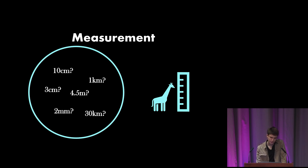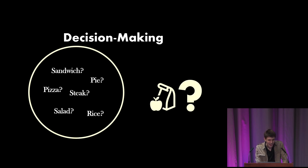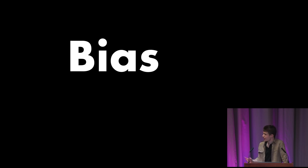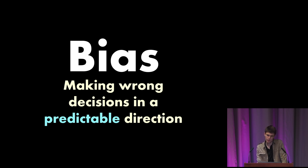So within measurement, we're selecting from a space of possible measurements, trying to find the one closest to the optimal measurement using limited tools. A ruler is fairly good, but it's not going to give us the exact answer. So in this case, we're measuring a giraffe and we get 4.5 meters. But in decision making, we're selecting from a space of possible decisions and trying to find the optimal decision using limited resources—maybe limited time or limited human reasoning. So we can define bias as making wrong decisions in a predictable direction.